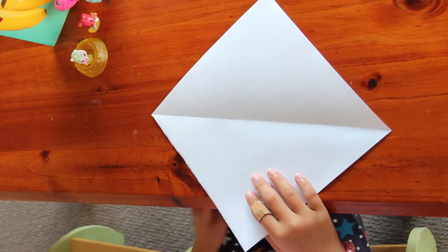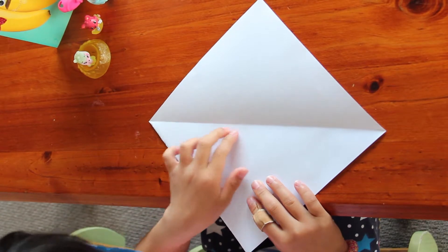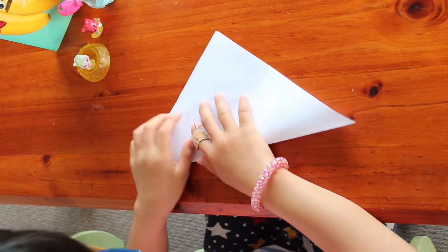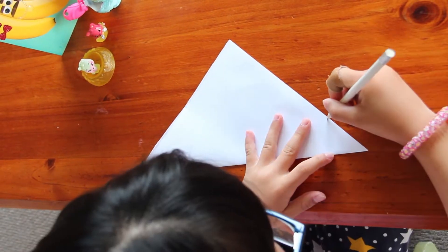Now I'm going to show you the close-up work. First, fold the paper in half diagonally. Then use a pencil to lightly mark.